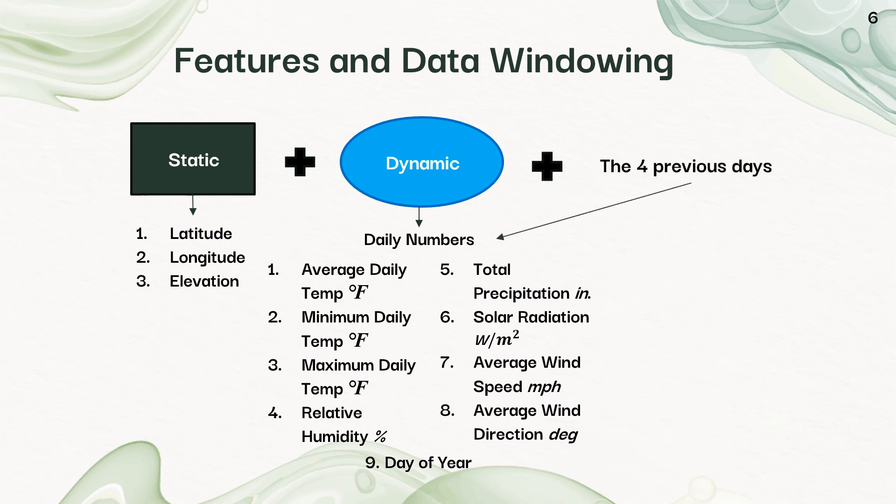And then to give the model some context, I added on four previous days' daily numbers. So for each of those, if you start on July 5th, you get July 4th numbers, July 3rd, July 2nd, July 1st.